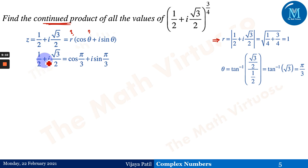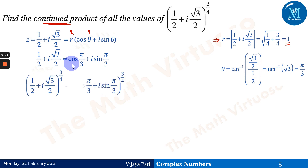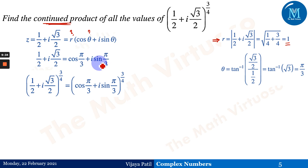Therefore 1/2 + i√3/2 = cos(π/3) + i sin(π/3), where r = 1. Now raising both sides to the power 3/4, and taking the 3 inside the angle, we get (cos π + i sin π)^(1/4), because 3 × (π/3) = π.